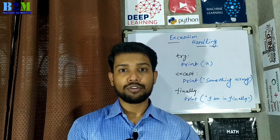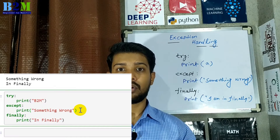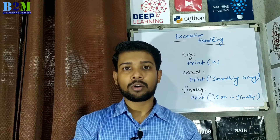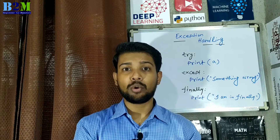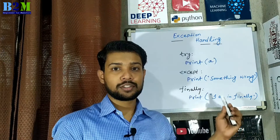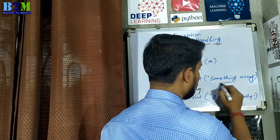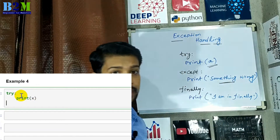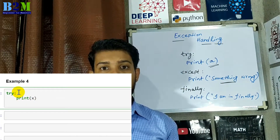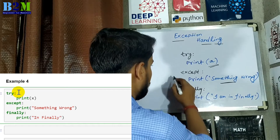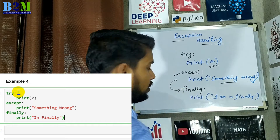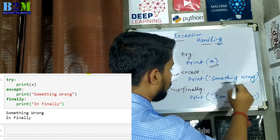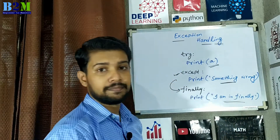The finally block is a block which will be executed regardless of whether the try block raises an error or not. In the previous example, the else block executes only if there is no error in the try block. For this code, the output will be 'something wrong', because the variable 'a' is not defined. After executing the exception block, it will then come to the finally block. So the total output will be 'something wrong' and then 'I am in finally'.